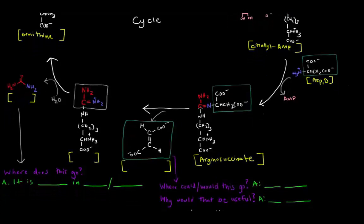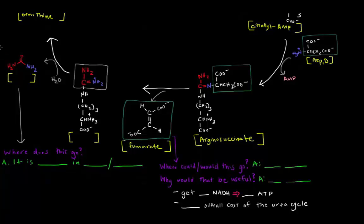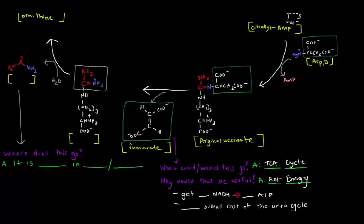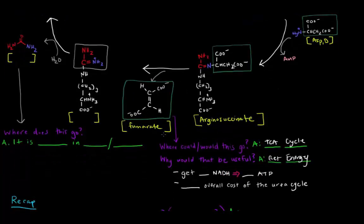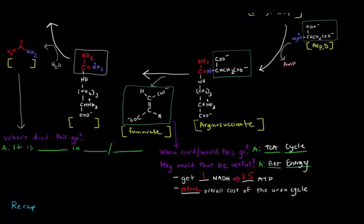What happens to arginosuccinate is that the succinate comes off as fumarate. That's important because this fumarate is part of the TCA cycle, or Krebs cycle, so we can get energy from it. Fumarate could yield us one NADH from the malate dehydrogenase step, which is the equivalent of 2.5 ATPs. This 2.5 ATP will basically reduce the overall cost of the urea cycle, because there are energy investments involved in this cycle.